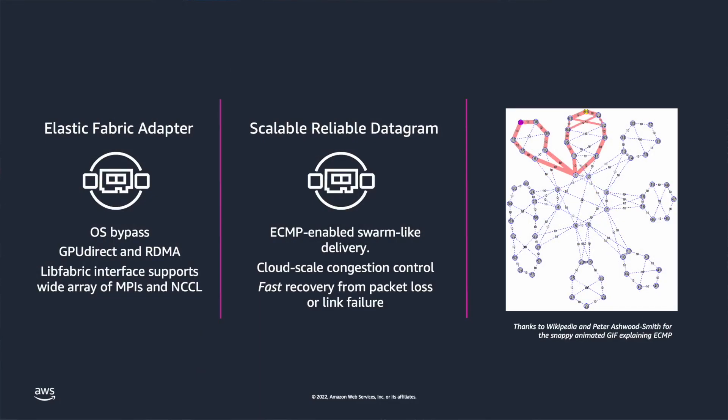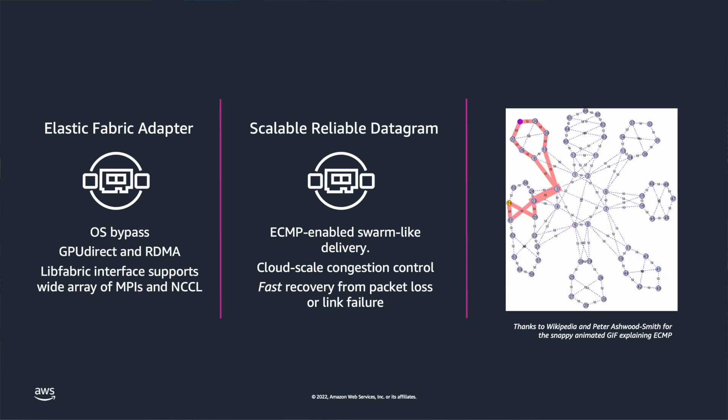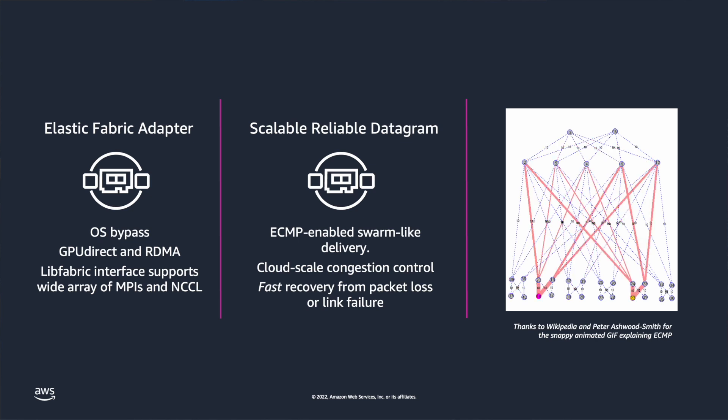SRD is kind of a remix on the InfiniBand Reliable Datagram protocol idea. SRD is the Scalable Reliable Datagram. There are several things that differentiate SRD from IRD and other packet-moving protocols like TCP. Our network is very large and therefore quite complex — the larger the numerical size of your job, the more nodes you're using, and the larger and more complex is the network infrastructure between any two nodes. We wanted to turn that into an advantage. We recognized that there are a lot of usable pathways between any two nodes, many of which are about as fast as each other. So we relaxed the constraint that packets had to arrive in order, and by doing that one little change, we could deliver whole streams of messages across multiple different pathways at the same time — it's kind of like a packet swarm over the fabric.